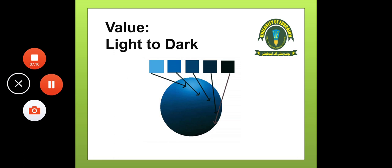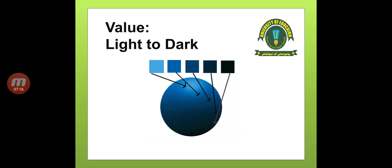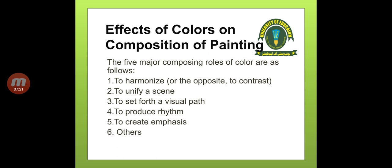Where there is cool light, a warm shadow will be created; and where there is warm light, a cool shadow will be created. Effects of colors on composition of painting — this was about color itself. Now what will be the effect of this color on composition?